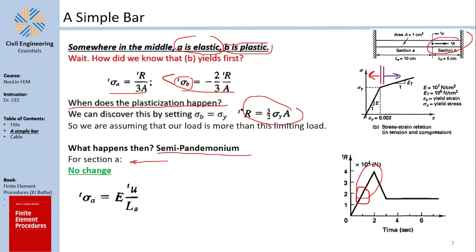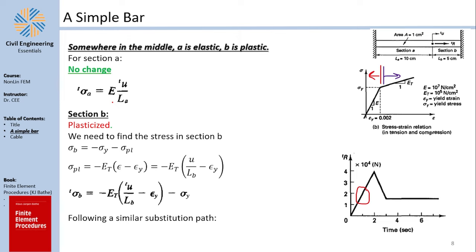For section A, because there is no yielding, nothing changes — the stress-displacement relationship remains the same. However, for section B everything changes, because now we need to find the stress at B as a function of strain and displacement. Sigma_B in this case is the yield stress plus a plastic stress component. Since it is compressive, sigma_yield is negative and sigma_plastic is negative.